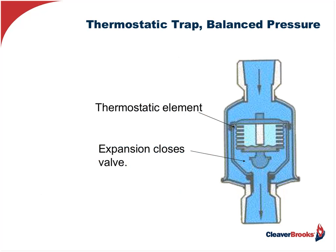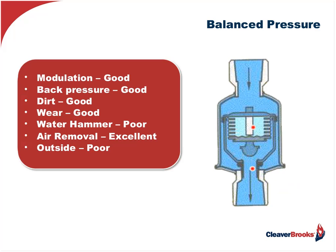As far as the thermostatic trap — we're using the balanced pressure type here. This is an alcohol-filled bellows which is sensitive to heat. As the bellows is subjected to heat because of the steam, it expands, closes off the orifice, and you trap the steam. Very simple operation — same as the air vent in the float and thermostatic trap. Good for modulation, good for back pressure. It's a trap used quite often in various types of applications. They all have their place and they all do a very, very good job.